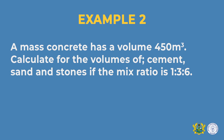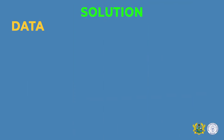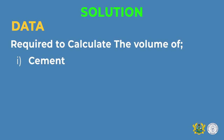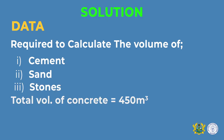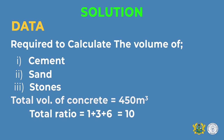Before you calculate any question, you must first come up with the data. Required: calculate the volume of (1) cement, (2) sand, and (3) stone. The total volume of concrete produced is 450 cubic meters. You must also find your total ratio by adding 1 + 3 + 6, which equals 10. After getting the total ratio, move forward to calculate the volume of each material.